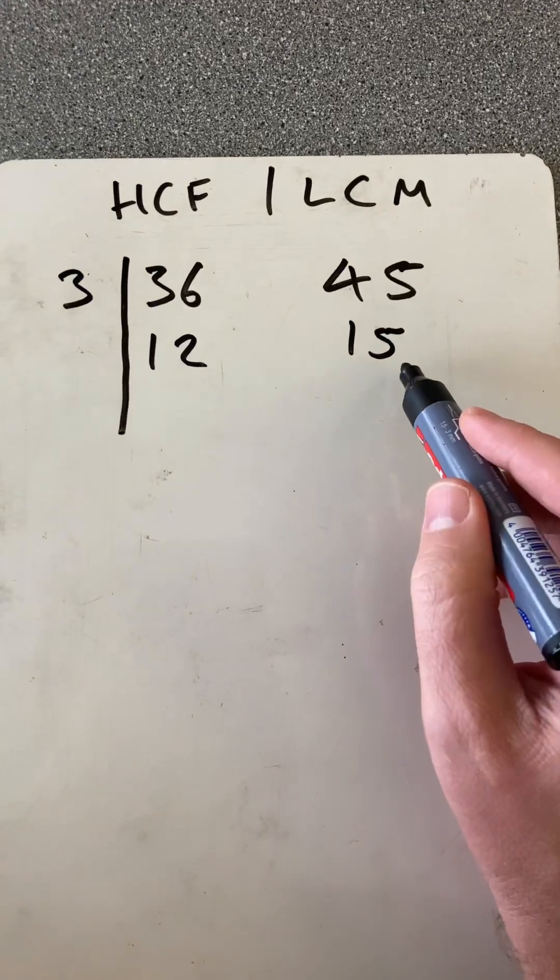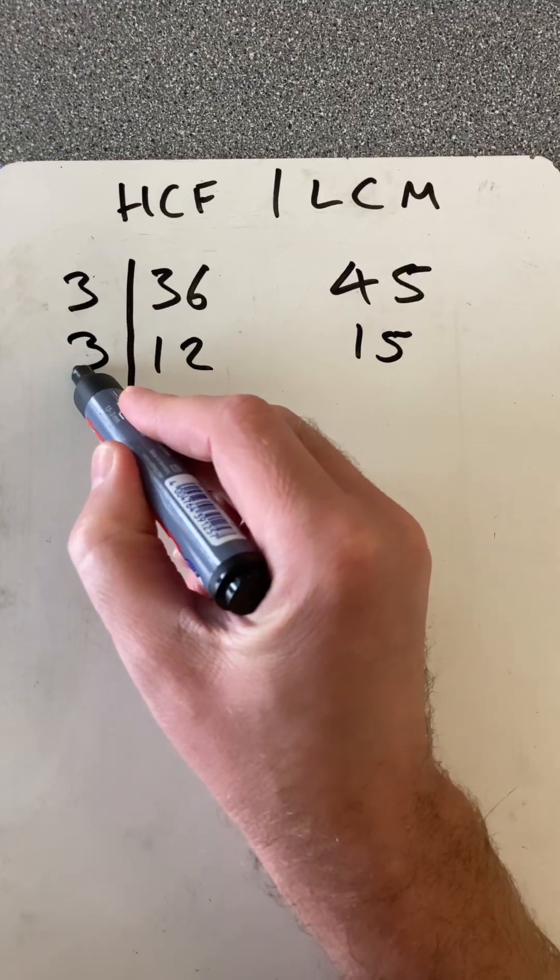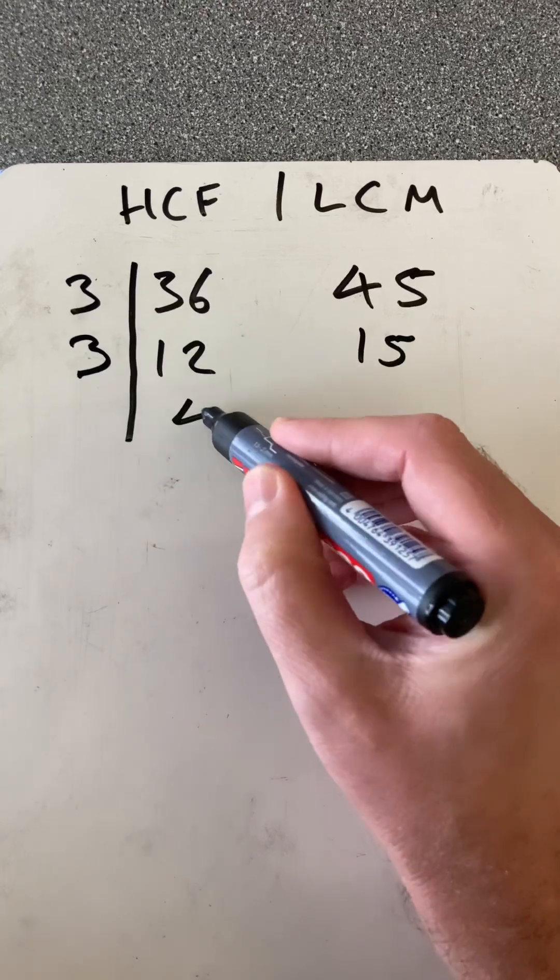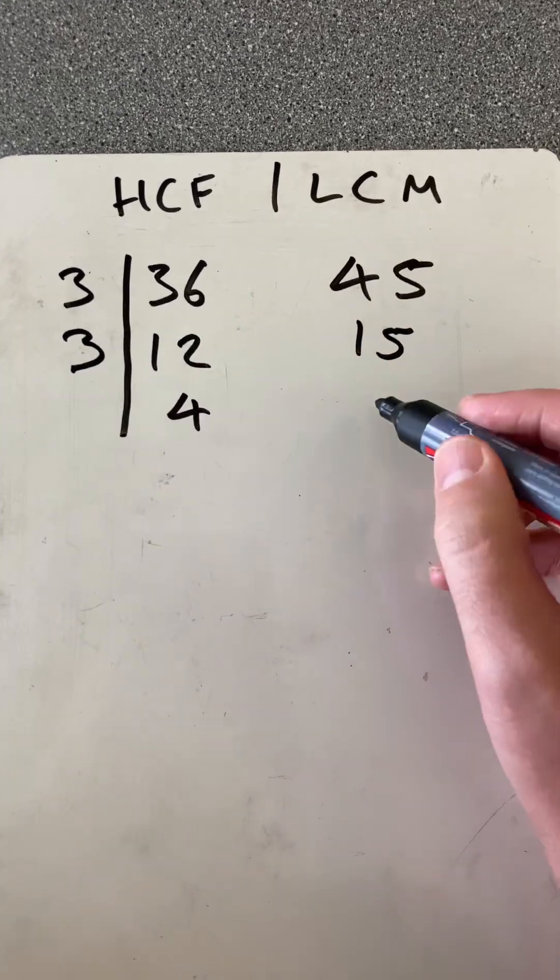12 and 15 then share another common factor of 3. So 12 divided by 3 is 4. 15 divided by 3 is 5.